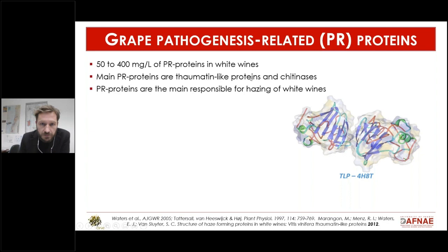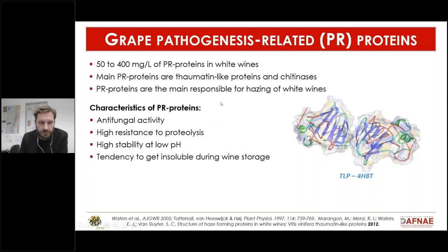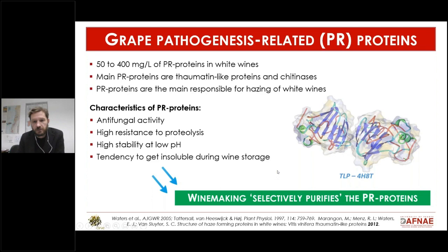The two main classes found in highest concentration are the thaumatin-like proteins (TLPs) and the chitinases, which are the reason wine turns turbid due to protein destabilization. Key characteristics of these proteins include their antifungal activity, high resistance to proteolysis — making them difficult to degrade with proteases — and stability at low pH such as that of wine. Unfortunately, they tend to become insoluble during wine storage. During fermentation and aging, most grape proteins are lost, except for the PR proteins, which actually cause instability — making them an increasingly concentrated problem during winemaking.